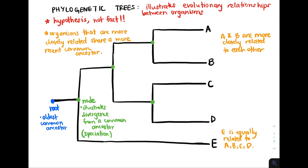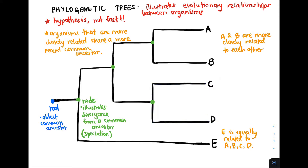Let's take a look at group C. C goes back to this node, and this common ancestor is shared with species D. Therefore, C and D are more closely related to each other than they are to any other group, because that common ancestor that they share is not shared by any other species on this tree.